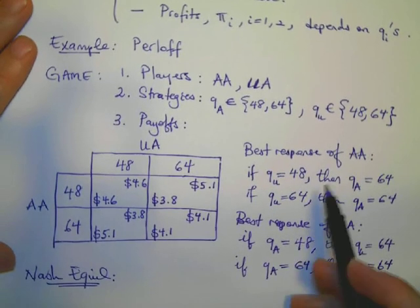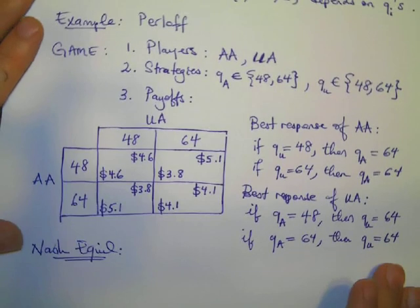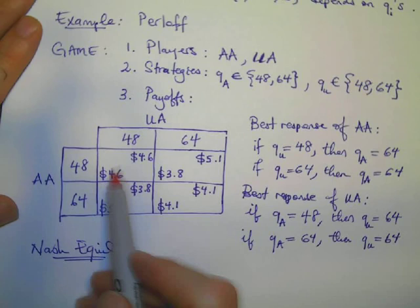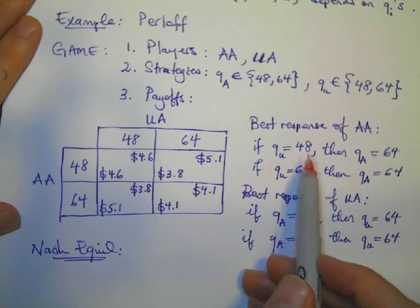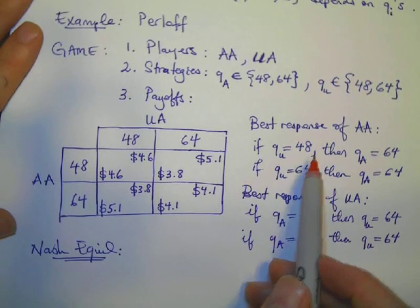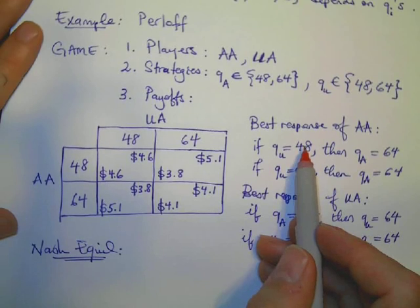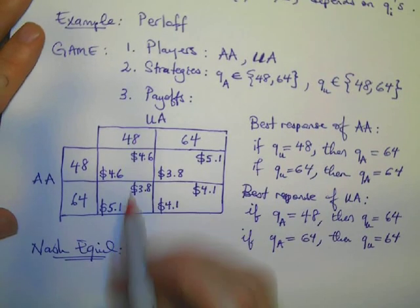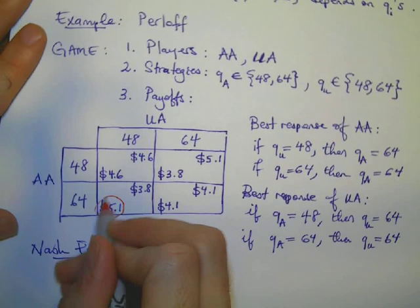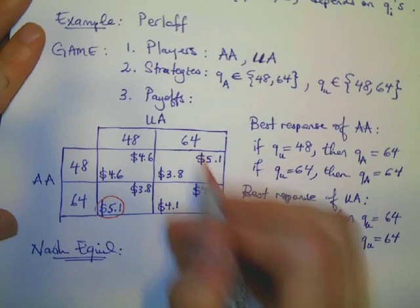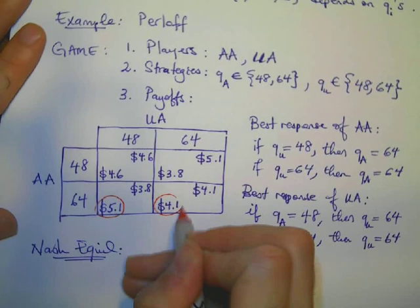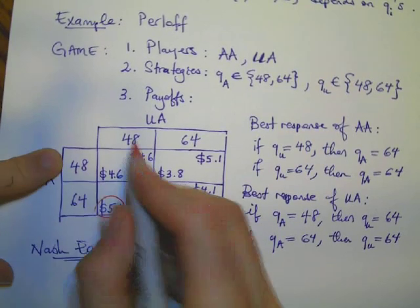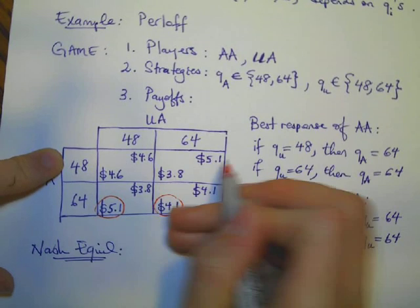So, the Nash equilibrium now of this game is where the best response curves, the best responses of both companies meet each other. So, the best way to see that will be by circling the best outputs, the best payoffs. So, we realize that when we have United flying 48, American will fly 64, so I circle it. When United flies 64, American will again fly 64, circle it.